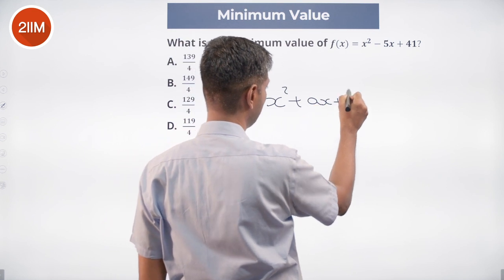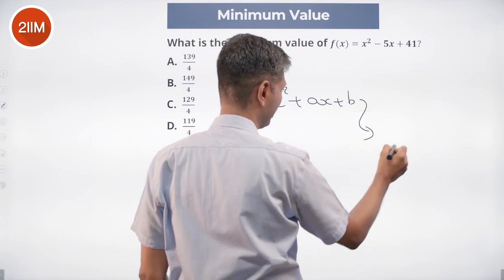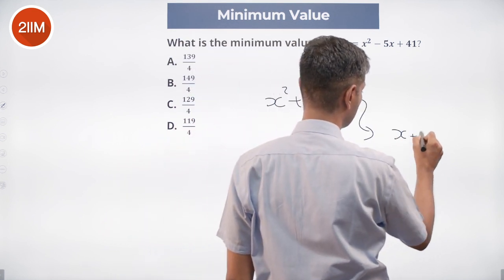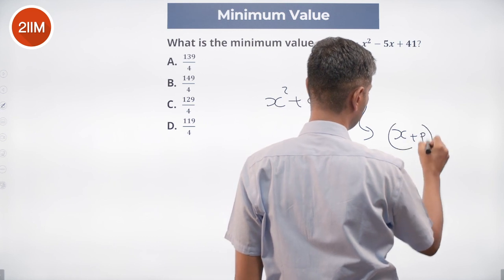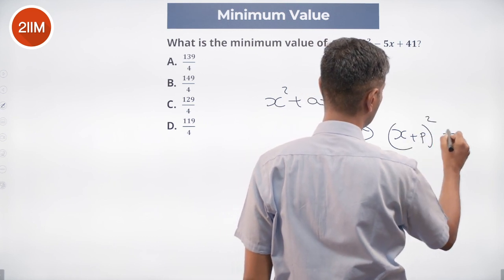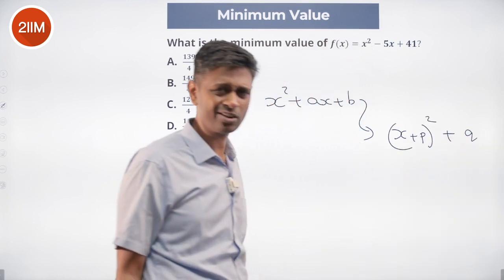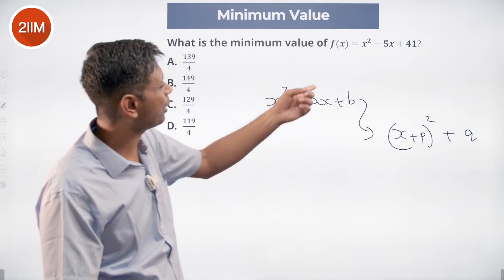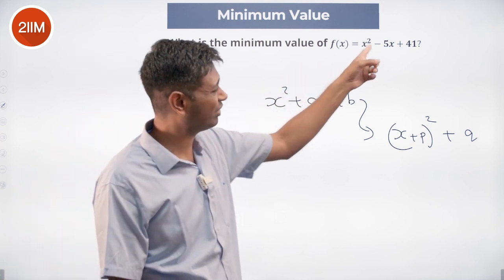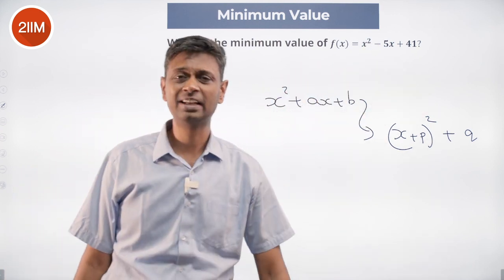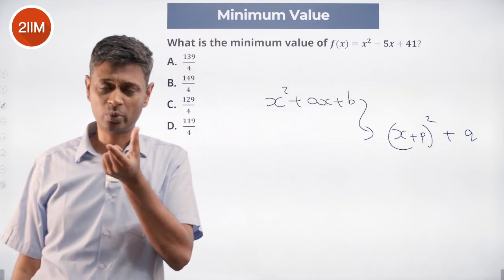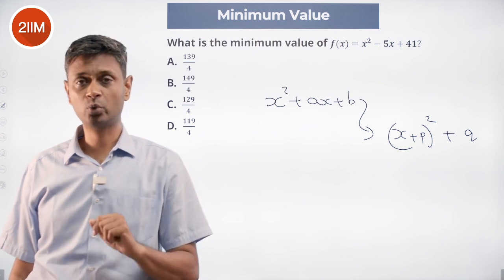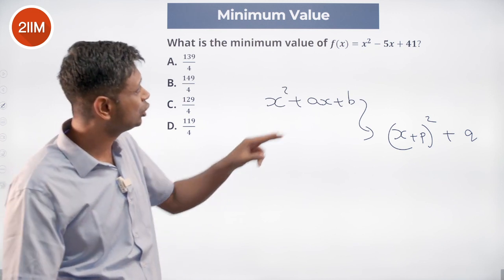It can be rewritten as (x + b) whole squared plus q. That's all. So for x squared minus 5x, note that (x minus a) whole squared equals x squared minus 2ax plus a squared.